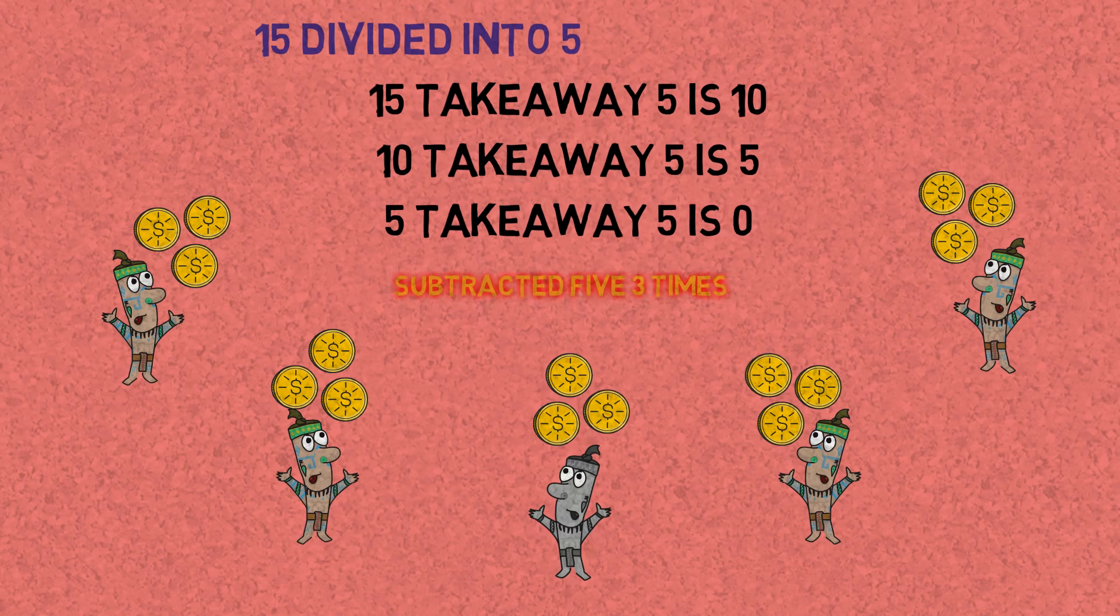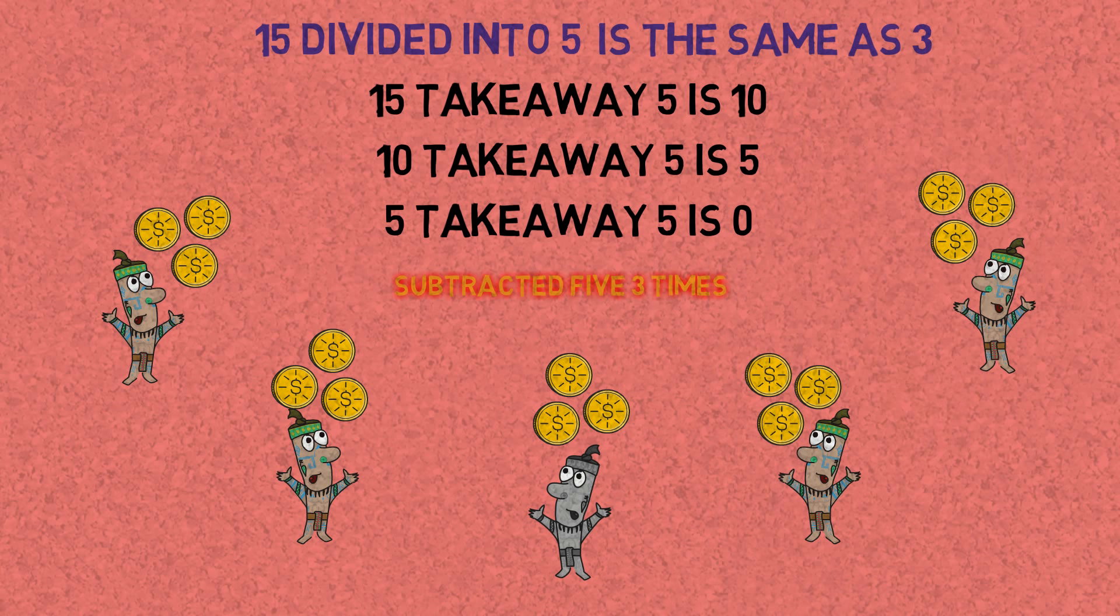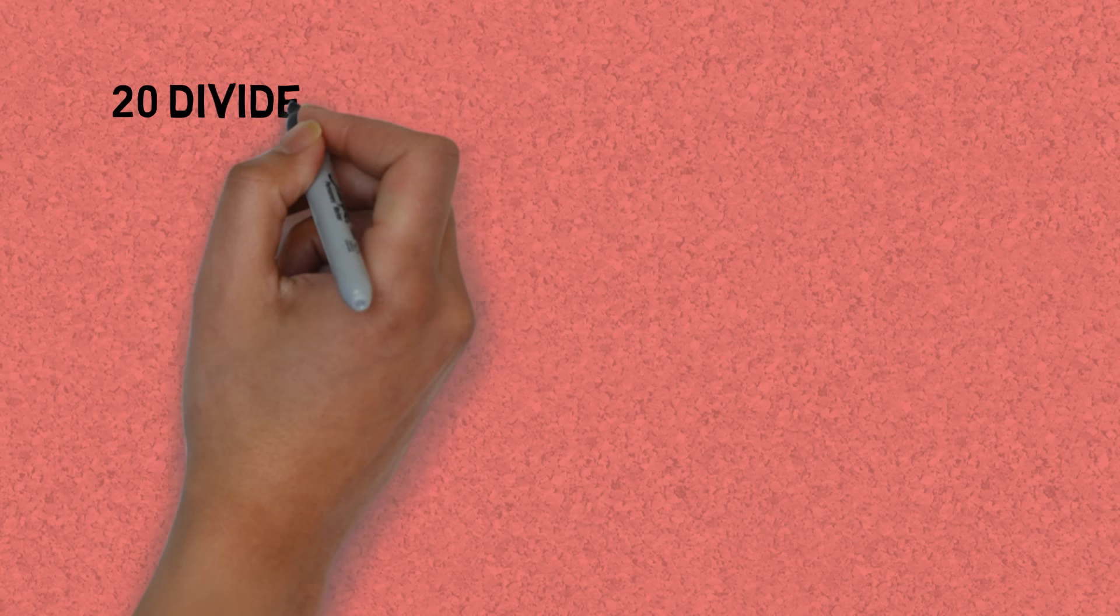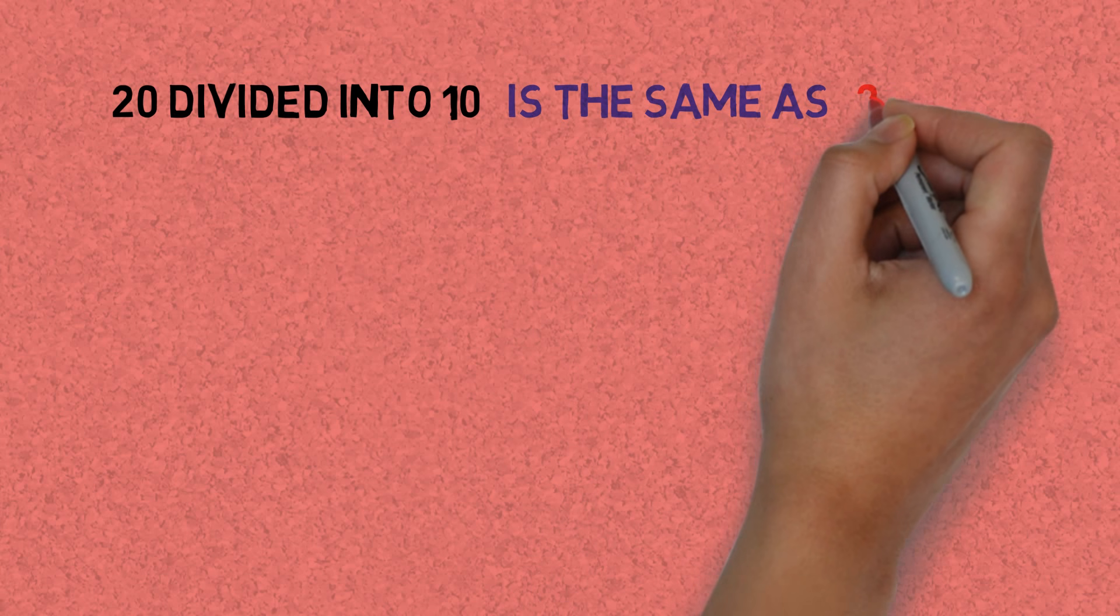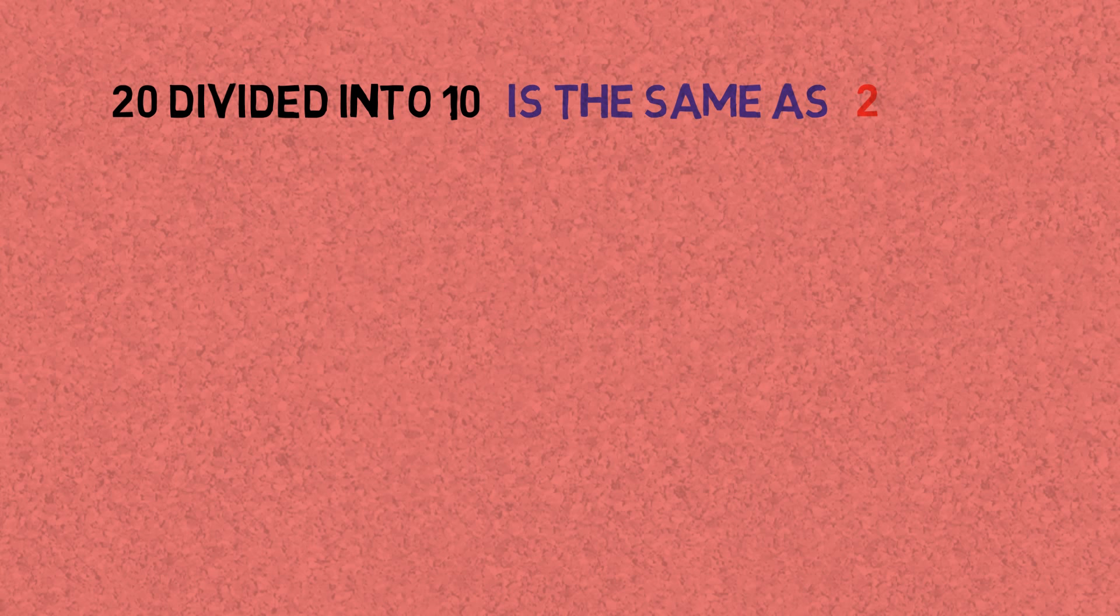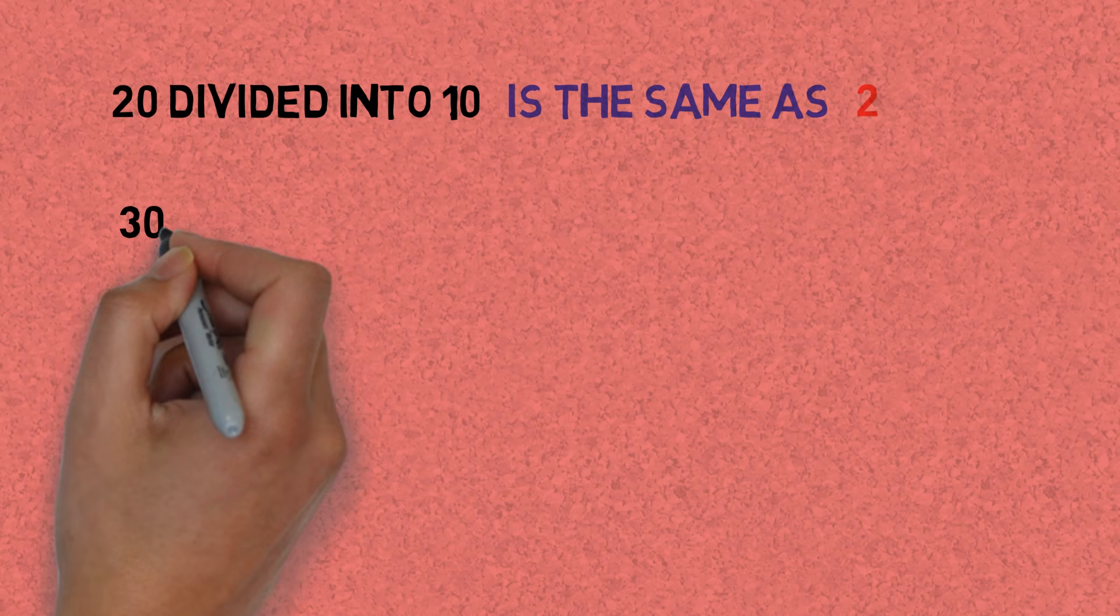So the conclusion is 15 divided into 5 is the same as 3. Let's try this with other numbers. 20 divided into 10 is the same as 2 because we can take away 10 twice. 20 take away 10, take away another 10, that's twice, so the answer is 2.